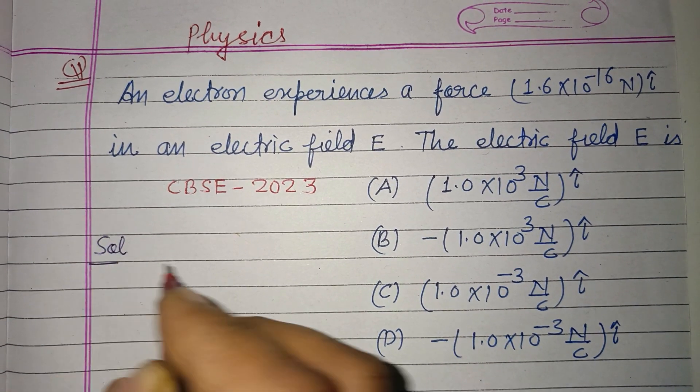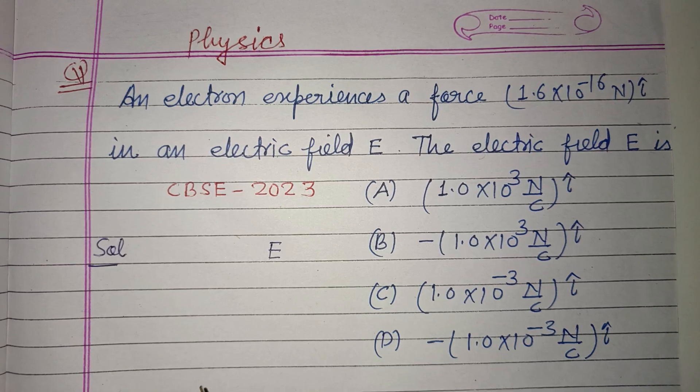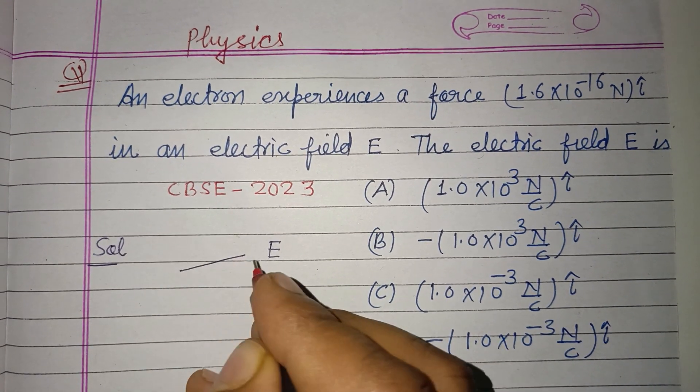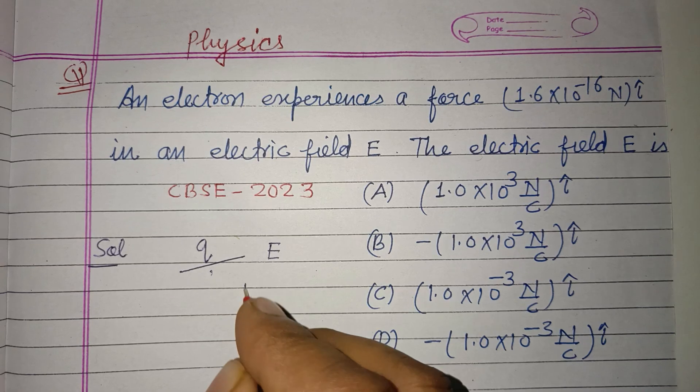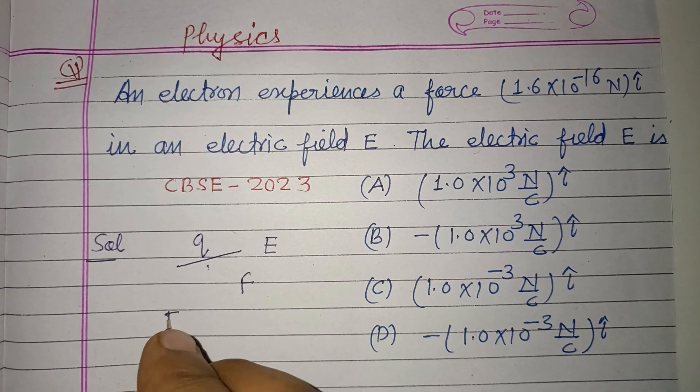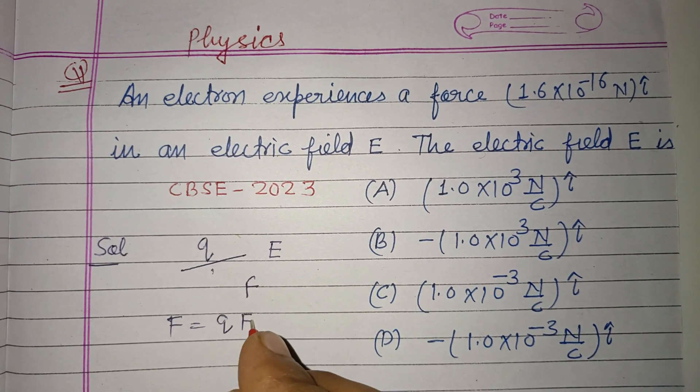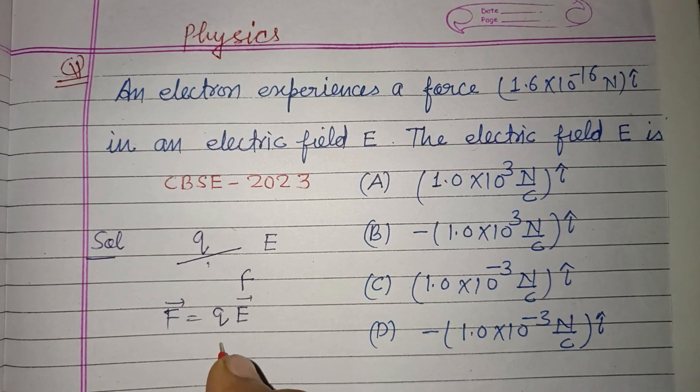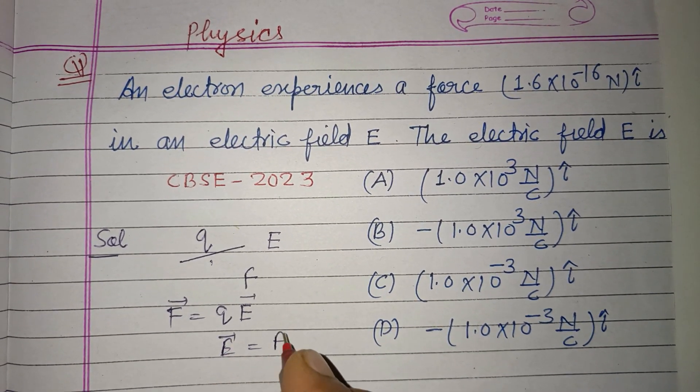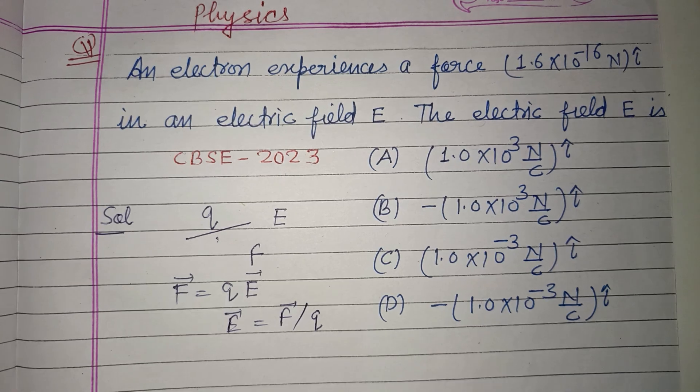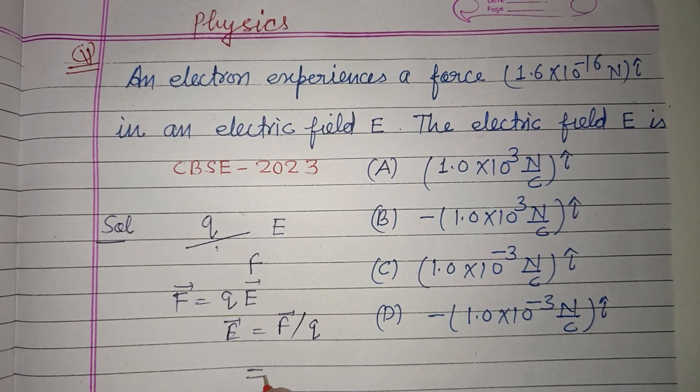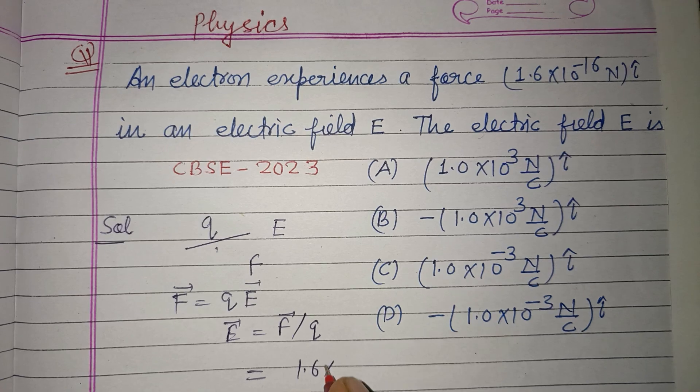So students, if in an electric field E a charged particle Q experiences a force F, then F equals QE. This is the formula, so E equals F over Q, and F is given to us as 1.6×10^-16